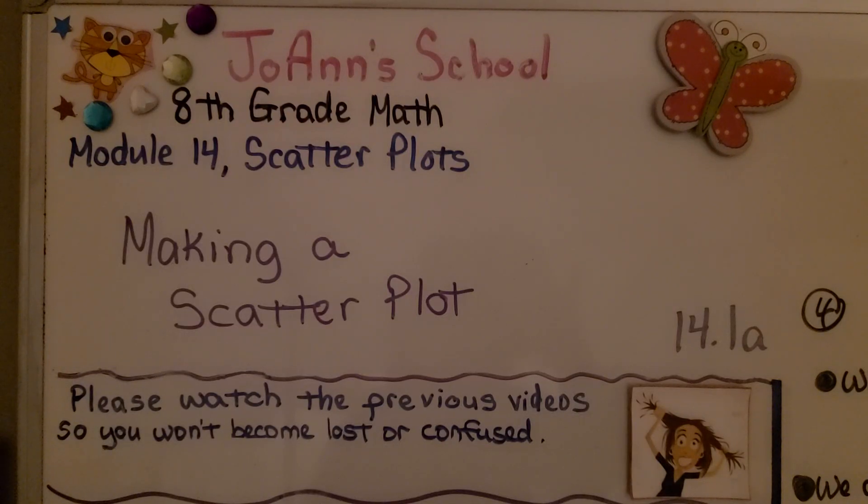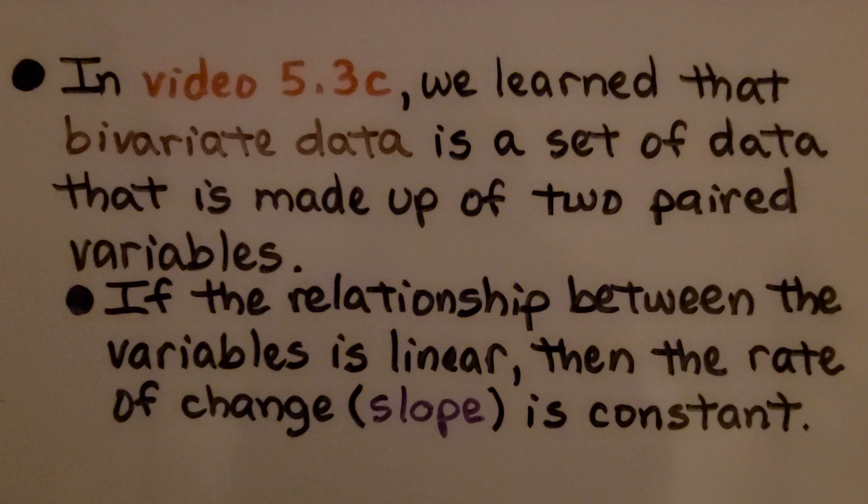Making a Scatter Plot, Lesson 14.1a. In video 5.3c, we learned that bivariate data is a set of data that is made of two paired variables. If the relationship between the variables is linear, then the rate of change, slope, is constant.